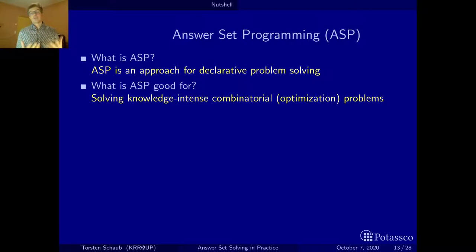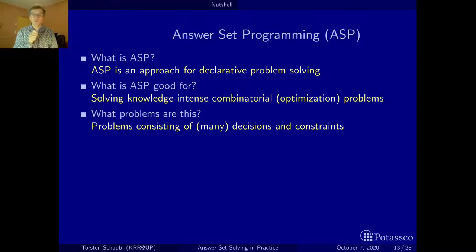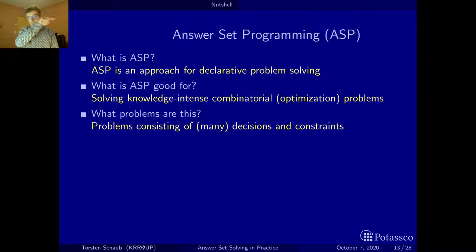What is a combinatorial problem or even an optimization problem? You may have done one already today — namely Sudoku. These are problems where you make many decisions under constraints. In Sudoku, you have a place where you put a digit between 1 and 9, and you must decide which one, but under constraints: the same digit cannot appear in the same line, column, or sub-square.